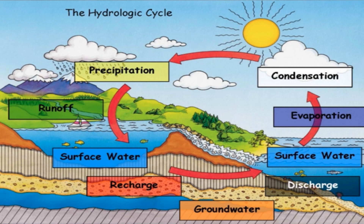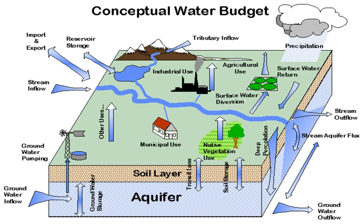Achieving sustainable water supplies necessitates a comprehensive grasp of the hydrologic cycle, comprehending how water traverses Earth's atmosphere, land surface, and subsurface. Water budgets serve as essential tools employed by water users and managers to quantify the hydrologic cycle.